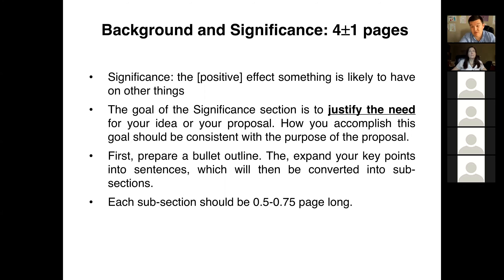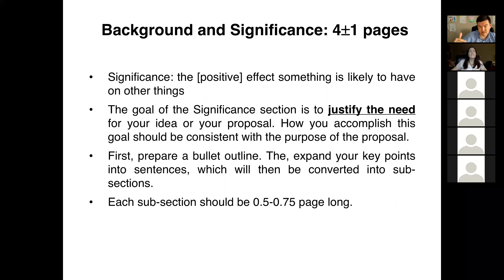We're using the NIH format because it represents the largest funding agency. How you accomplish the goal of justifying the need for your proposal to be funded should be consistent with the purpose of the proposal. What I usually recommend is to start by preparing a bullet outline of key points to discuss in this write-up of about four pages. Don't start drafting the text from scratch — start with a detailed outline.